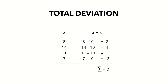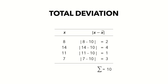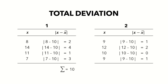Instead, we can add the absolute values of the deviations. For the data set 8, 14, 11, 7: |−2| + |+4| + |+1| + |−3| = 2 + 4 + 1 + 3 = 10. For a second data set 9, 12, 10, 9, the absolute deviations are 1, 2, 0, and 1 for a total deviation of 4. The first data set has a higher total deviation, meaning greater variation than the second. This seems like a better way of describing variation than range since you get an idea of the spread of the data points.